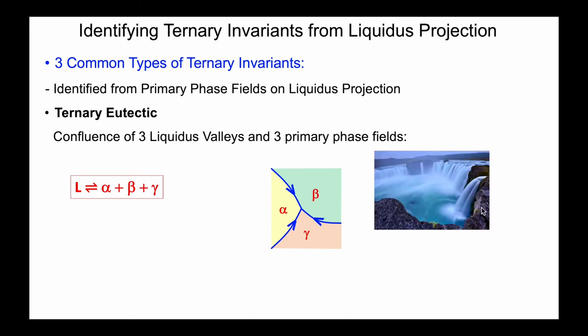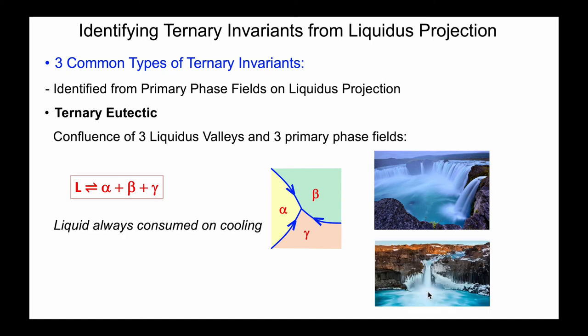A ternary eutectic is typically easy to identify just from the arrows and the primary phase fields around it. It's equivalent to three waterfalls coming into a lake, but at the ternary eutectic, after the reaction is completed, all of the liquid is consumed — the lake instantly freezes. The ternary eutectic is the lowest temperature at which any liquid can exist, so we have spontaneous freezing.